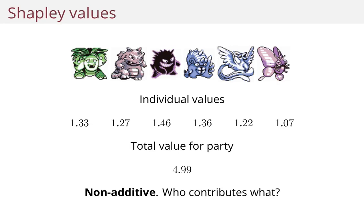Let's talk about inspection and Shapley values. So the total value for this party is 4.99, and each Pokemon has an individual value. But this is a non-additive function, because it's the interplay between these Pokemon that makes it such a good party. So who contributes what to this party?